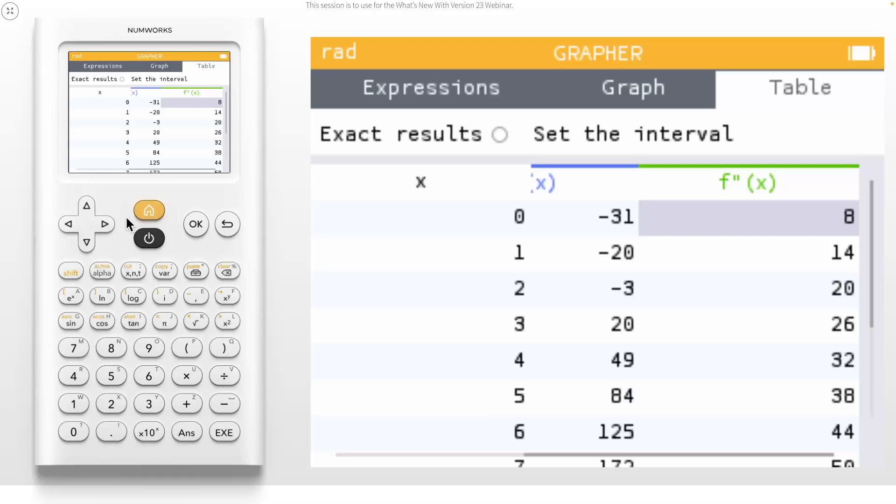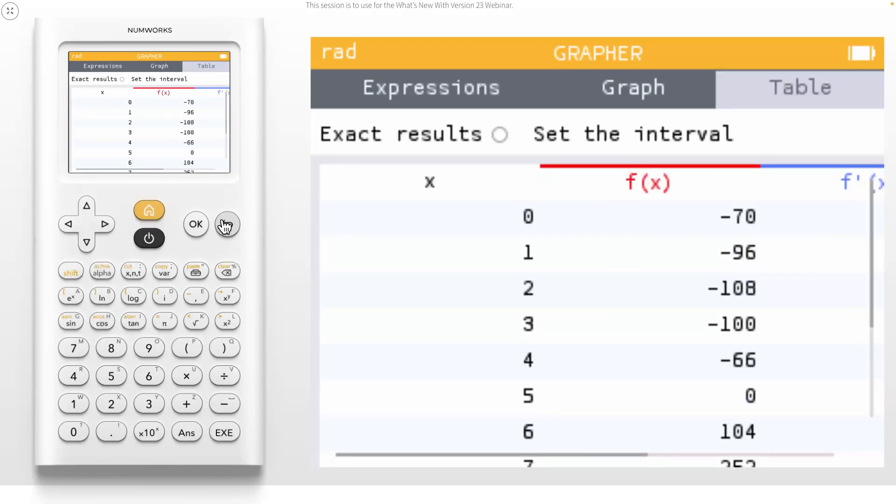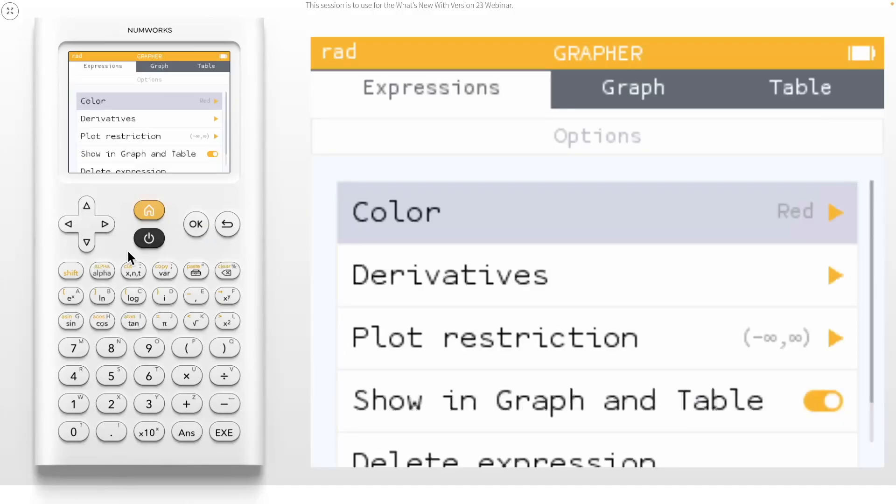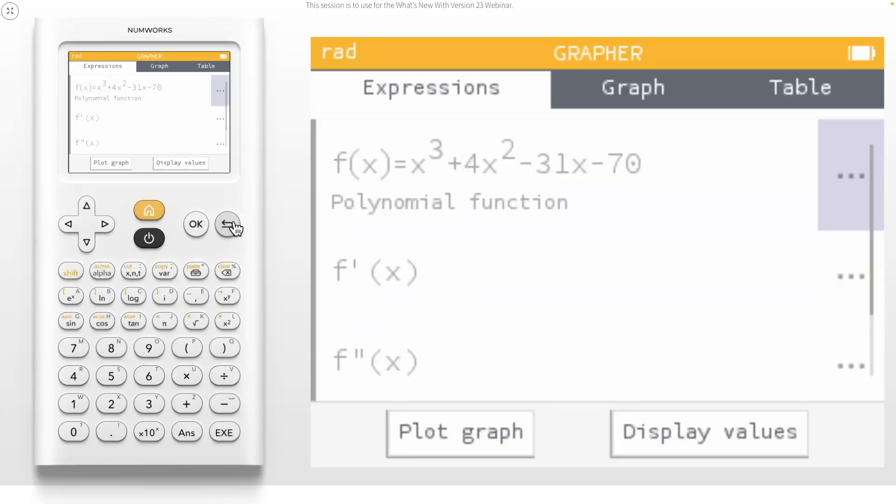The next new features we will explore will be really useful for exploring polar and parametric functions. Before doing this, let's hide the functions we have already created so they will not be graphed. Go back to the options menu and deselect show in graph and table, then press the back button. Notice that not only is our primary function now hidden, but its derivatives are hidden automatically as well.